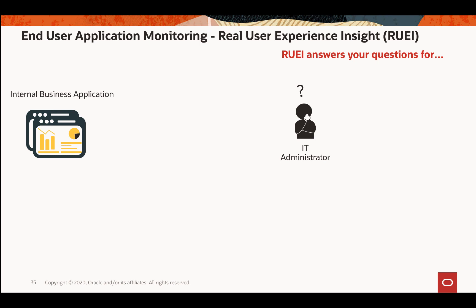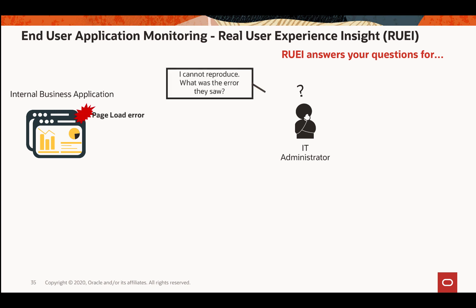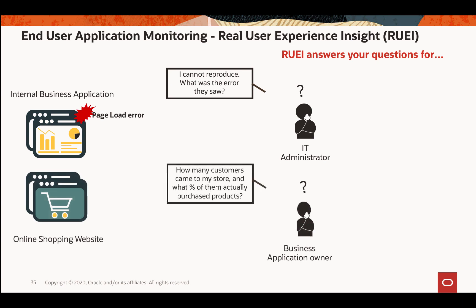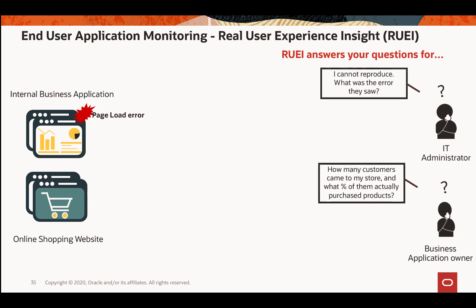Let's start by knowing what questions RUI can answer. On the left-hand side we have an internal business application with an IT administrator managing it. Say there was a page error — users could not load the page and called the administrator. However, the administrator could not reproduce the problem. In another example, an online shopping website owner wants to know how many customers came to the store in the last 24 hours and what percentage actually purchased a product.